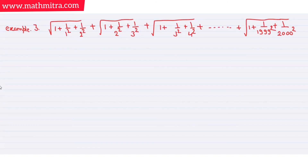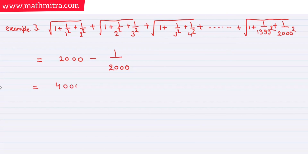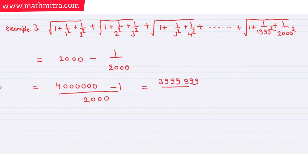Suppose you have a problem and have to find the sum. The last term given is 2000, so we apply the formula. The last term is minus 1/2000. This gives the answer. Substituting into the formula you get the final result.